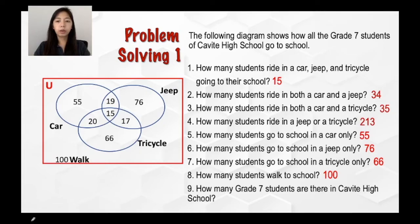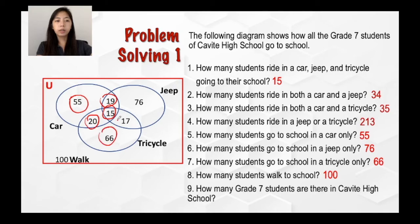And for the last question, how many grade 7 students are there in Cavite High School? This time, since it's asking for the total number of students, you're going to just add everything, and even the number outside the three sets. This means that you're going to add 55, 19, 15, 20, 66, 17, 76, and 100, for a total of 368. So that is the total number of grade 7 students in Cavite High School.